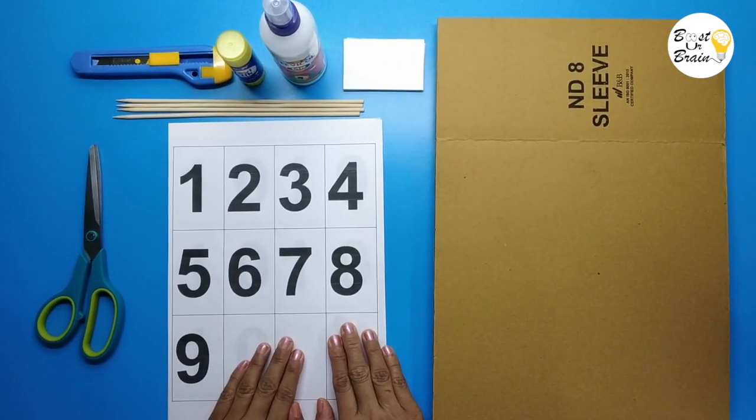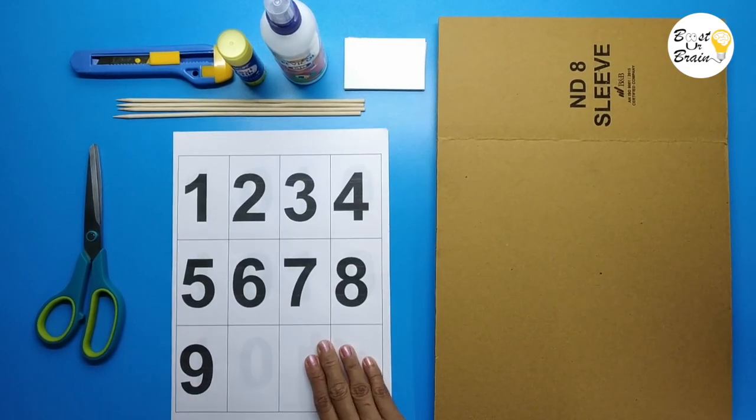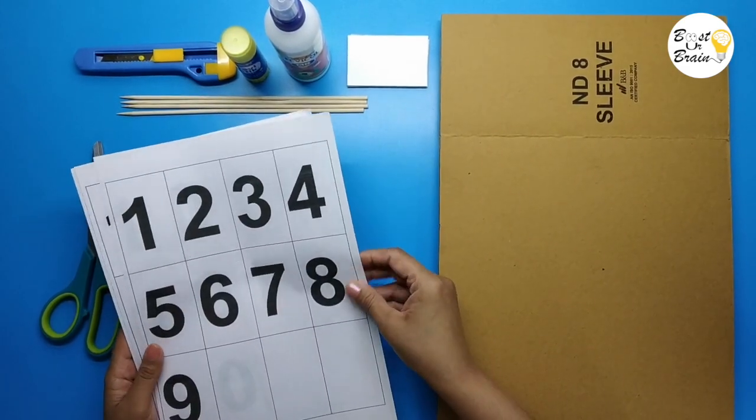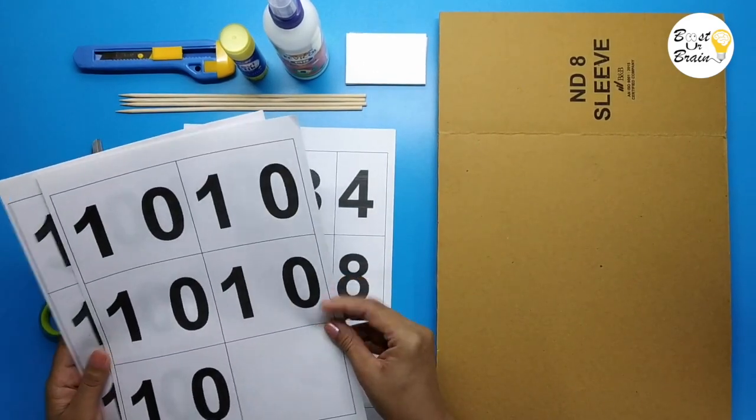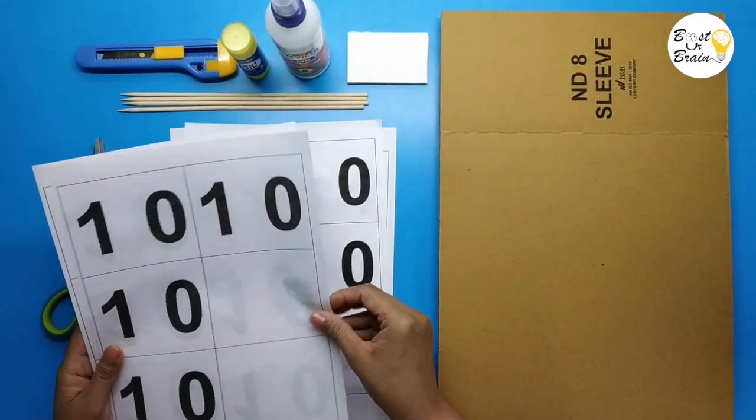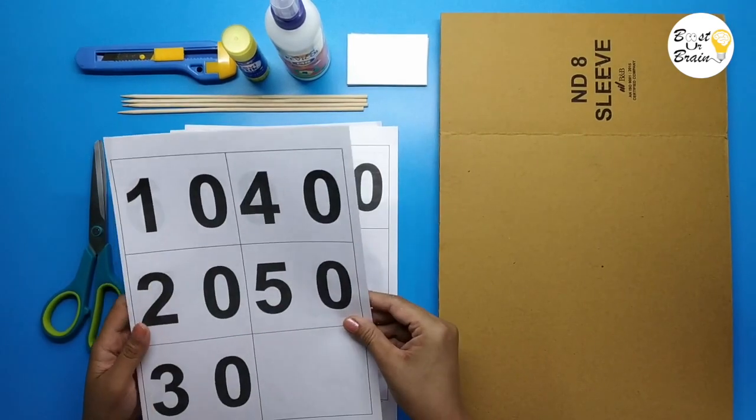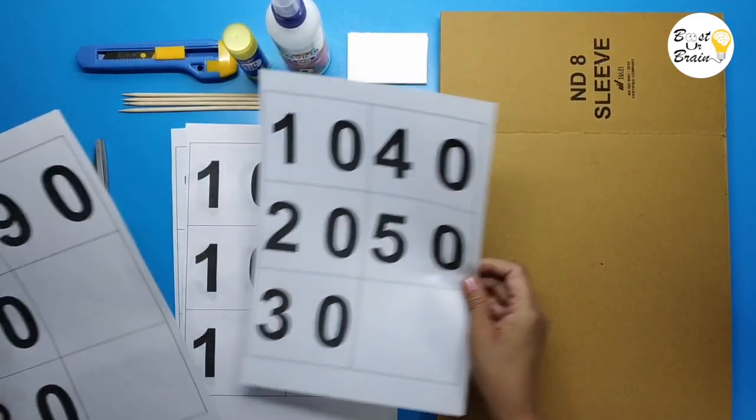For making the Teen board we need print out of numbers, number 1 to 9. For Teen board we need 9 times 10, and for 10 board we need number 10, 20, 30 till 90.